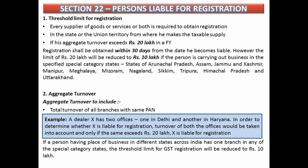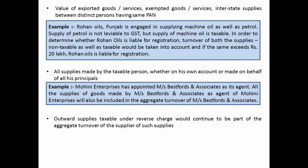If any branch of a person is in a special category state, then the GST registration turnover limit for that person is Rs. 10 lakh. For example, if X has three branches — one in Delhi, one in Haryana, and one in Himachal Pradesh — then X must register all three branches if the total turnover exceeds Rs. 10 lakh. Turnover also includes exported goods, services, exempt goods or services, or interstate supplies between distinct persons having the same PAN. If a person supplies to their own branch in another state, it is included in the turnover of the person who made the supply.